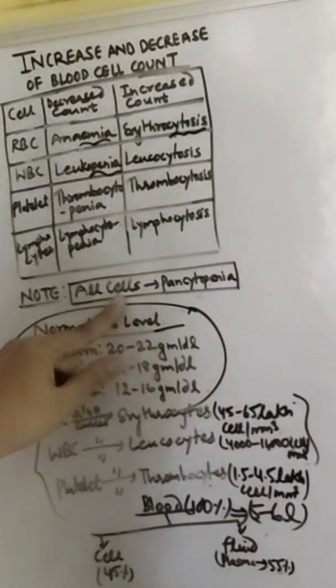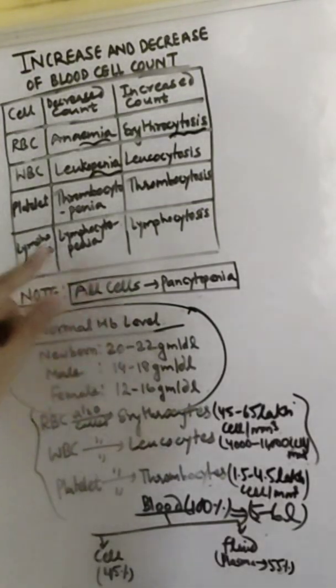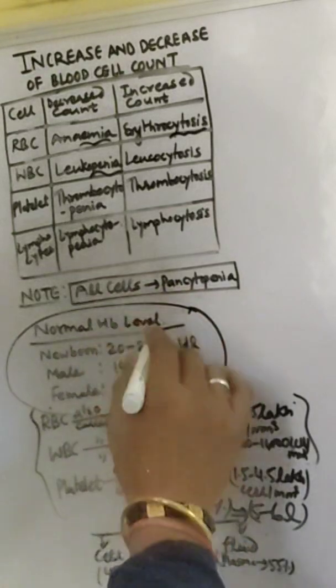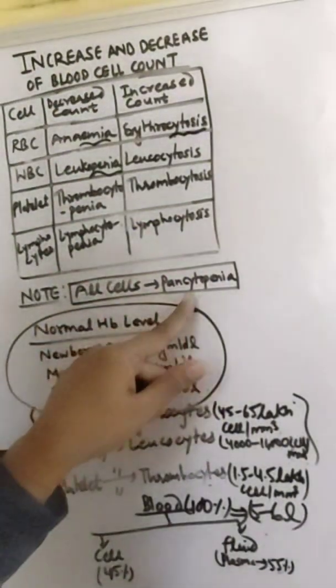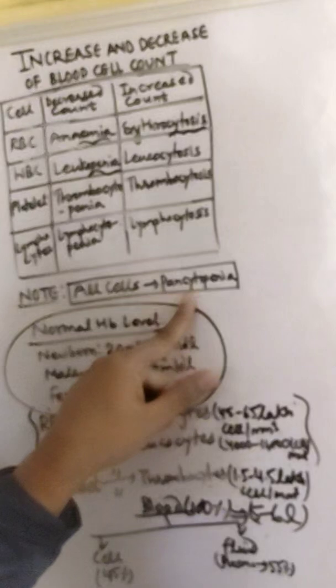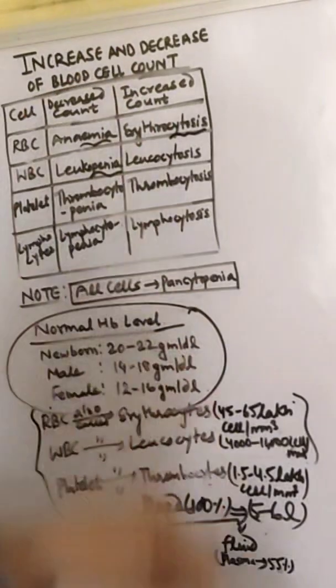And note all cells. In the case of all cells, if decreased amount, so RBC, WBC, platelets, then we call it commonly pancytopenia. So this is all about increase and decrease.